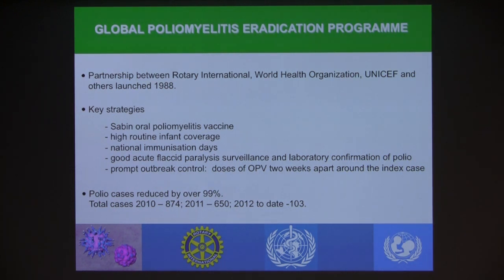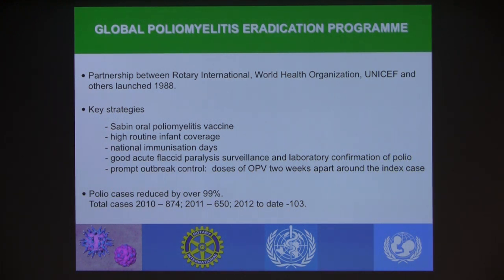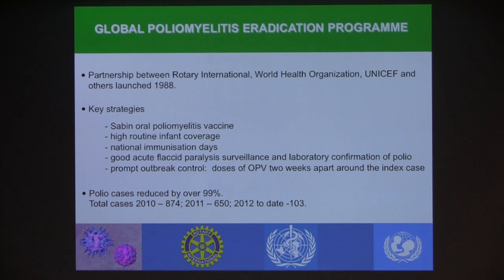Surveillance is essential — you must know your enemy quantitatively. Laboratory confirmation of polio is required because there are other causes of acute flaccid paralysis. If there is a little outbreak, particularly towards the endgame in a country, you mobilize forces for prompt outbreak control with two doses of oral polio vaccine two weeks apart around the index case — this can involve hundreds of thousands of doses, immunizing all the kids around a tiny village case.